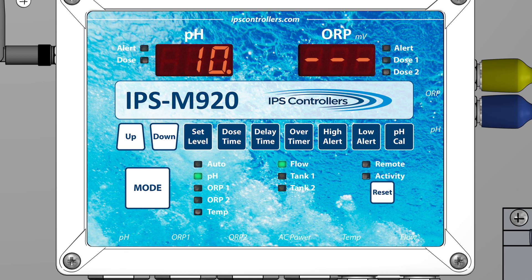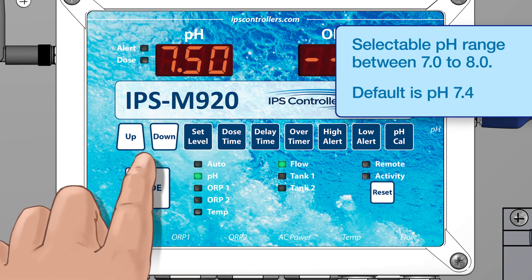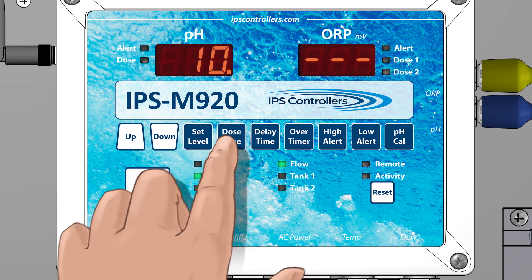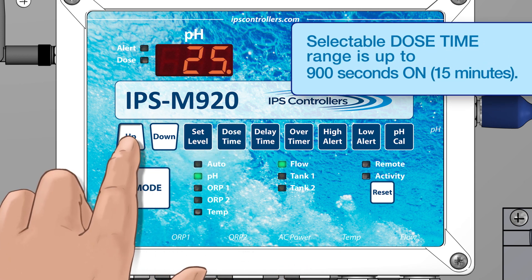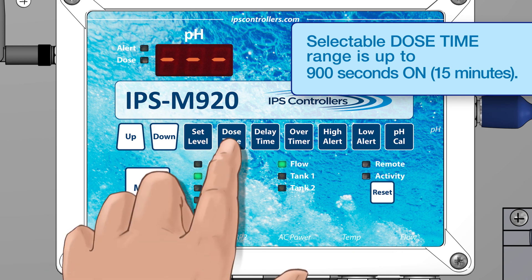Level, time, and alerts can be adjusted by pressing the appropriate function button. Press the Set Level button, then using the Up or Down buttons, choose the desired target pH level. Use your pool capacity calculations to determine the dose time. Press the Dose Time button and select a dose time of up to 900 seconds on. It is recommended to start with a low dose time and gradually move up to a longer dose if the pH set level has not been reached.